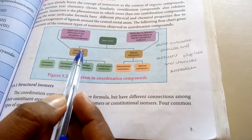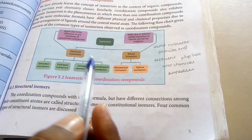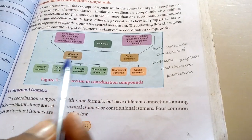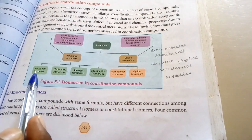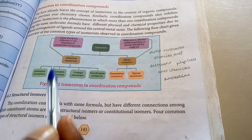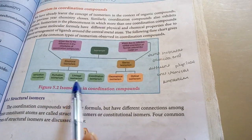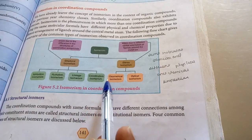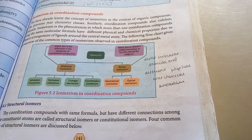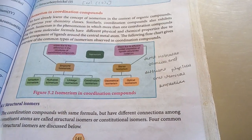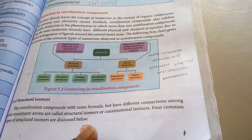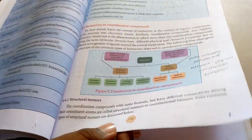Structural isomerism is broadly classified into four types: one is ionization isomerism, another is hydration isomerism, another is linkage isomerism, and the fourth is coordination isomerism. We will first discuss ionization isomerism.